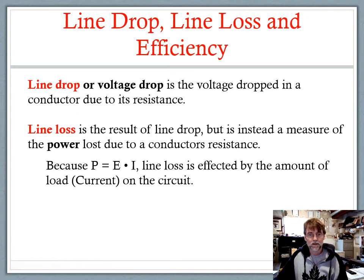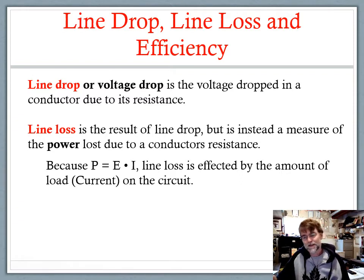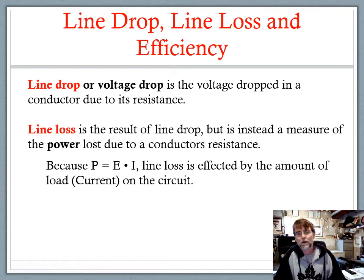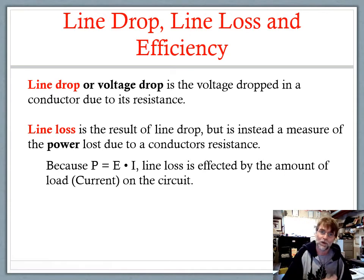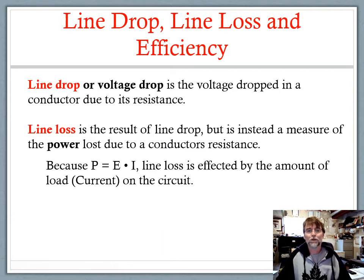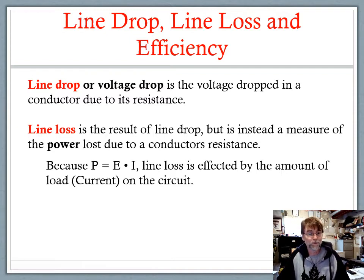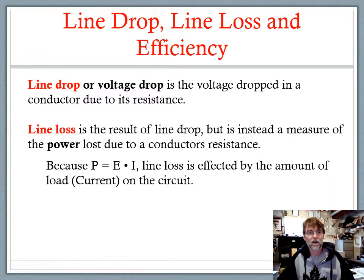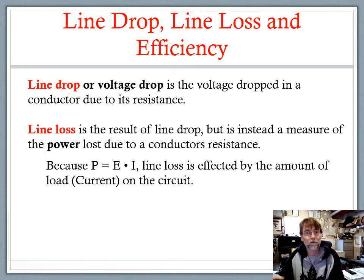Because P equals E times I, line loss is affected by the amount of current. The voltage is a consistent value — whatever the power supply offers is what it offers. But as electrical loads are plugged in or disconnected, turned on or off, the amount of current in the circuit continues to vary. Because power is voltage times current, as you increase the current in the circuit, you increase the amount of power being lost. When we talk about line loss, because it's a power conversation, we're really going to focus on the current draw of whatever loads are plugged into the circuit.